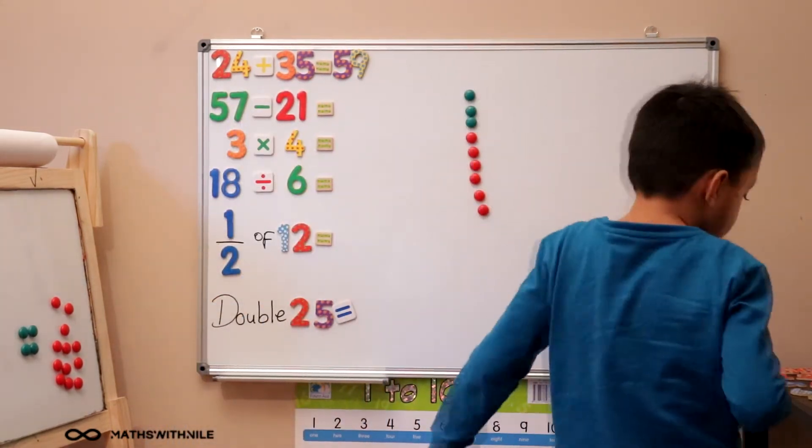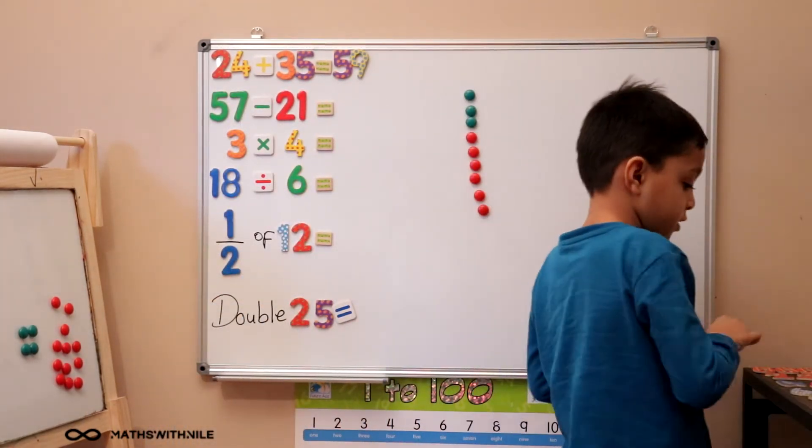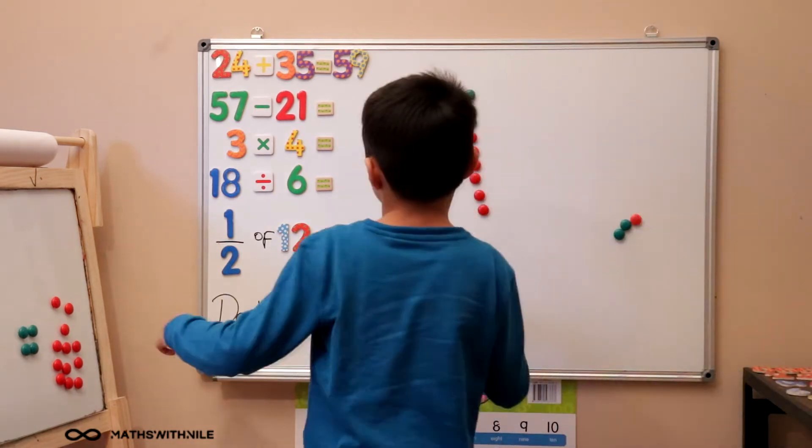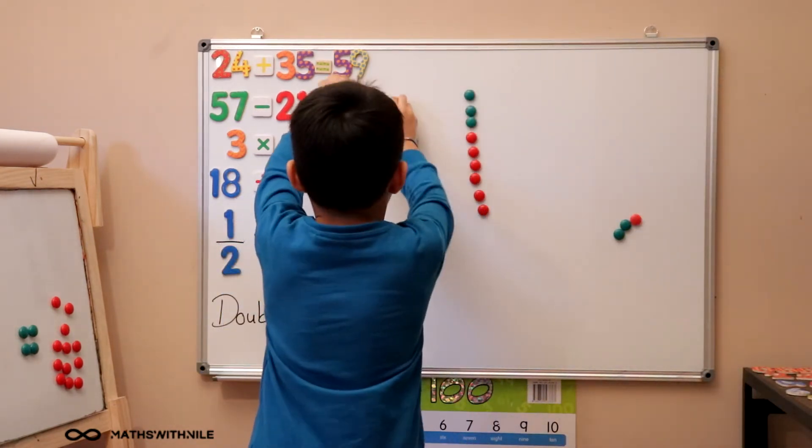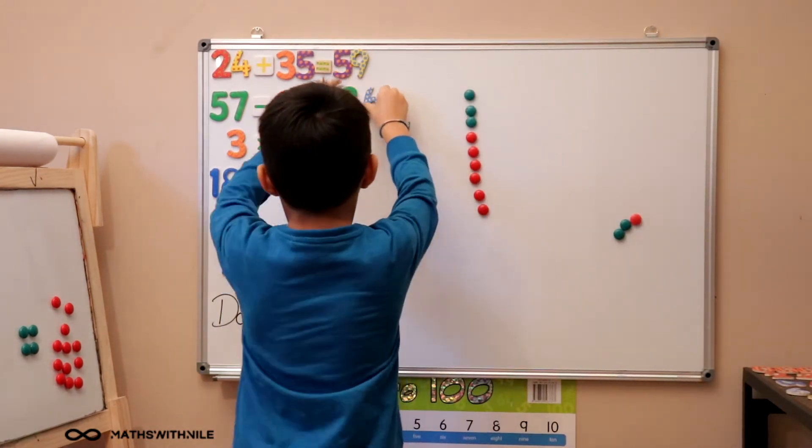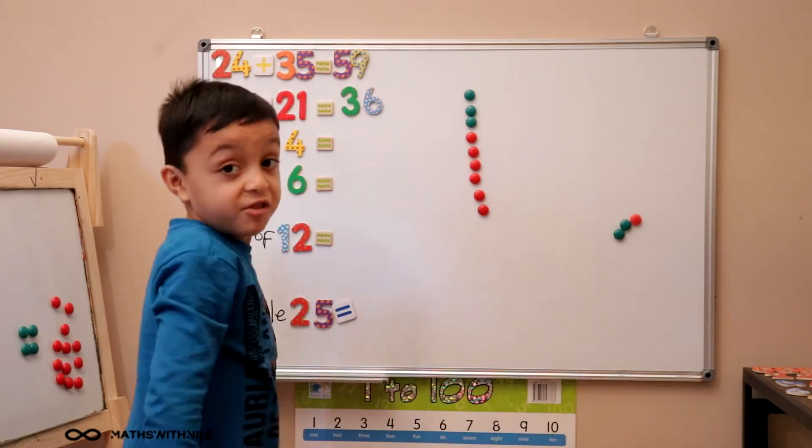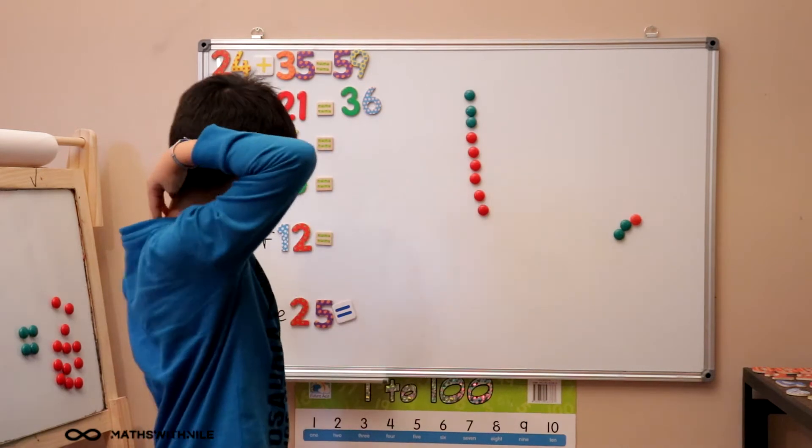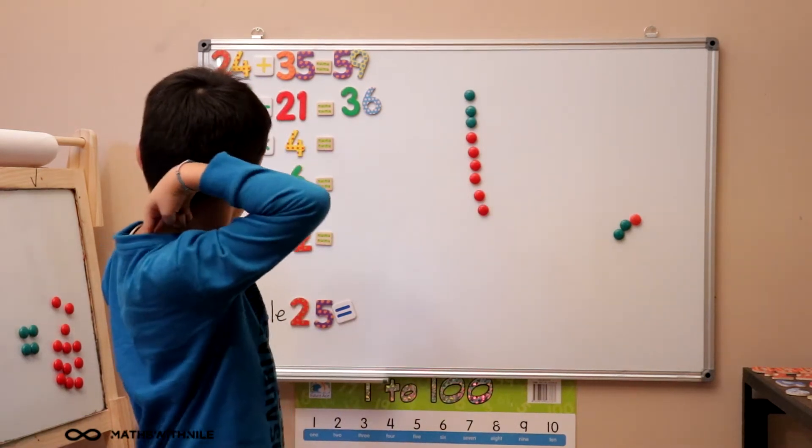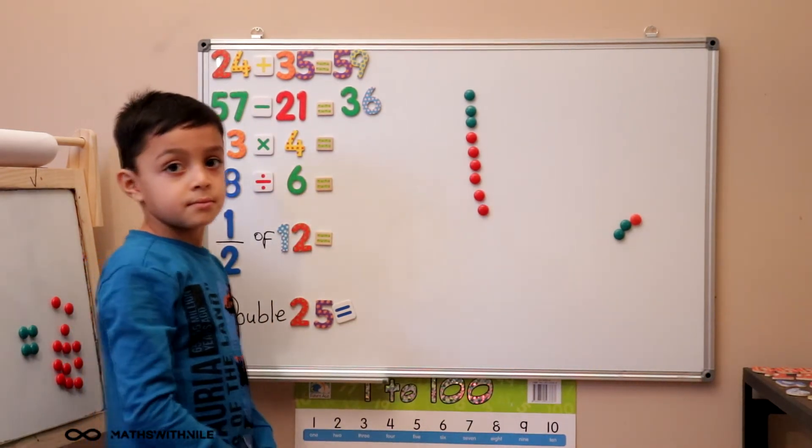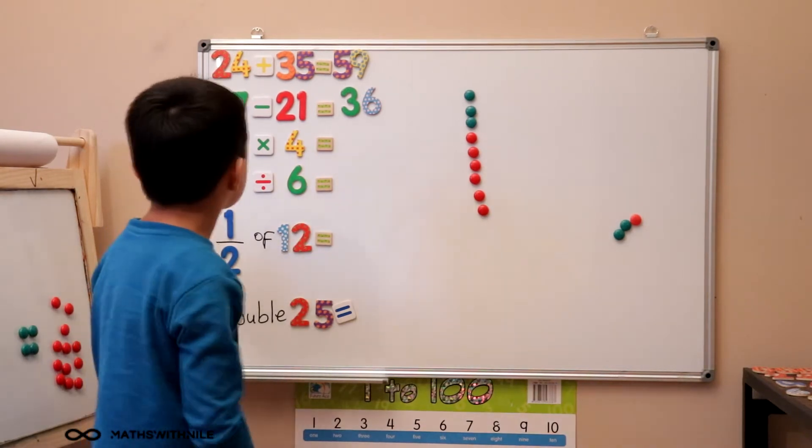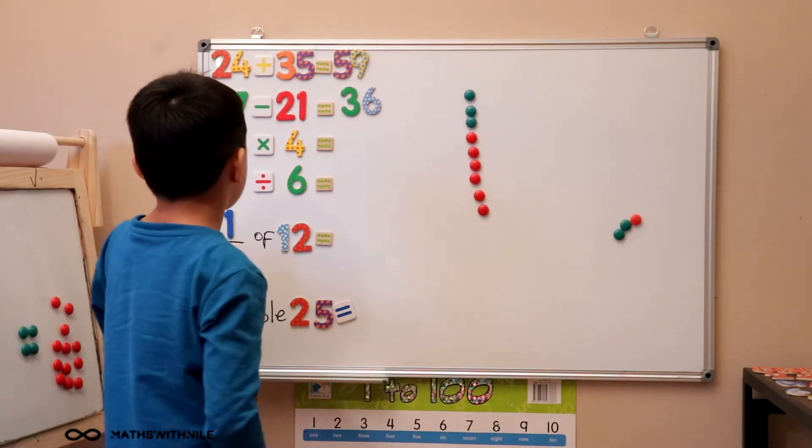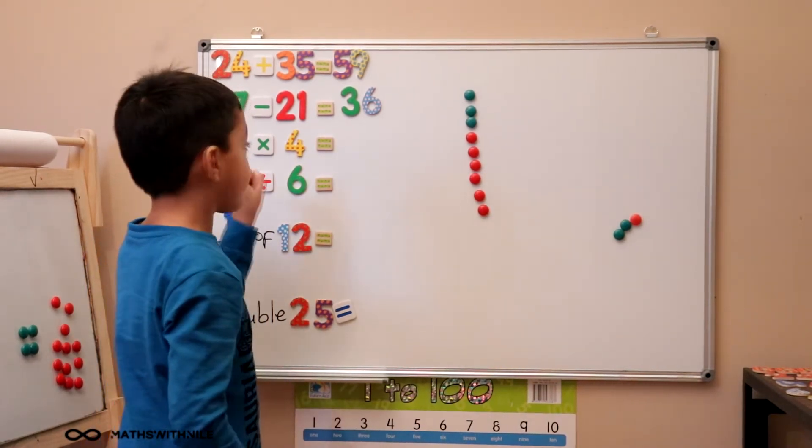Can you put the answer for us? 36. That was actually a little bit tricky. It was. Okay. Let's do the next question. What does it say? Can you stand in the middle so we can see it or to the side? What does that next question say?